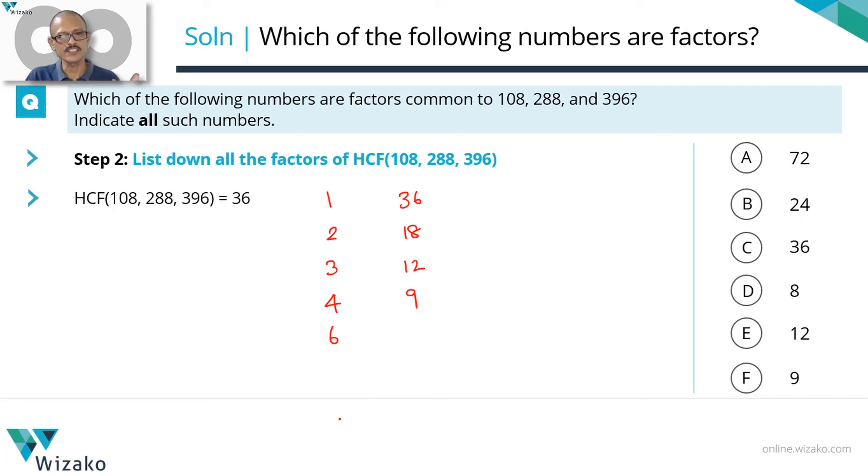Now we are going to go to the answer options and check out whether the answer option given is one of the common factors you have listed down. All of these factors of 36 are factors common to 108, 288, and 396. 72 is not one of the answer options, 24 is not found in one of these factors, 36 is found, 36 is here. 8 is not found, 12 is one of the common factors, so let's go with the 12. 9 is one of the common factors. So how many of these answer options are common factors: 9, 12, and 36. Answer options C, E, and F are the correct answers.